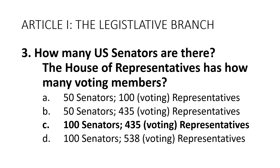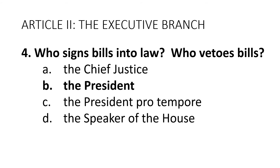Question 3: How many U.S. Senators are there? The House of Representatives has how many voting members? Answer C: We have 100 Senators and 435 voting members in the House of Representatives. Question 4: Who signs bills into law? Who vetoes bills? Answer B: The President.